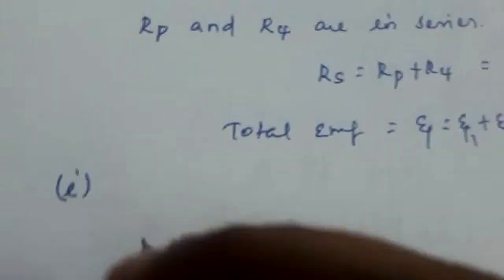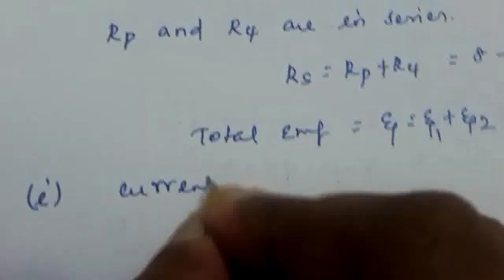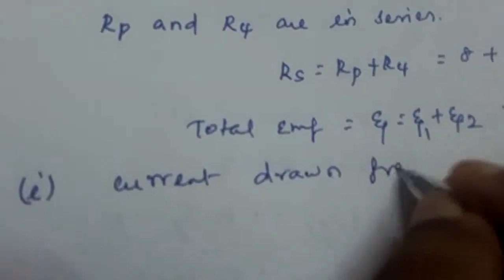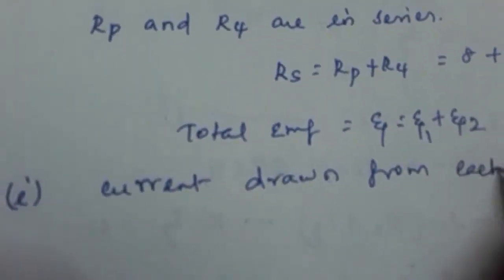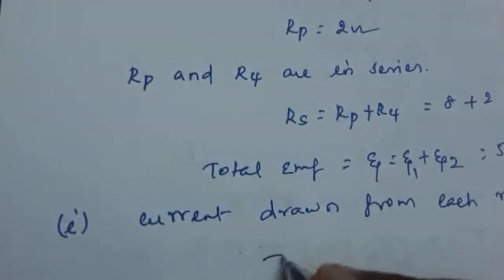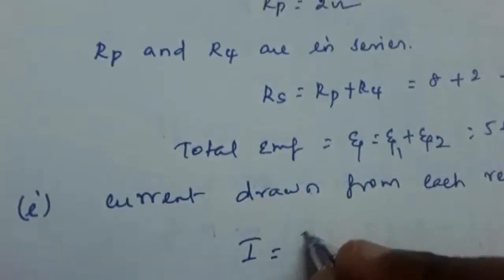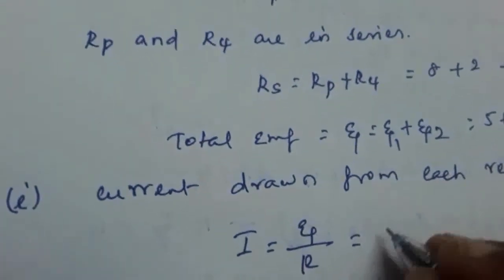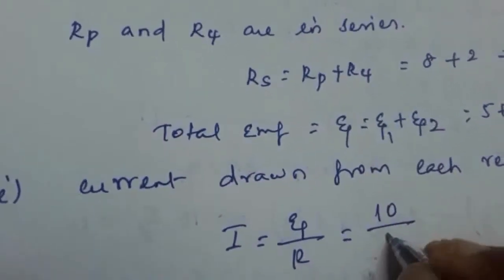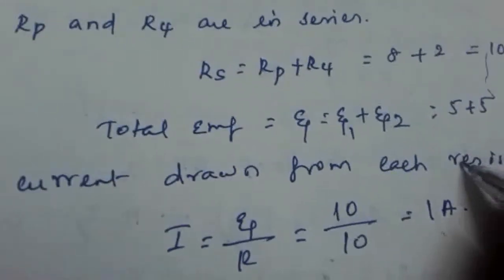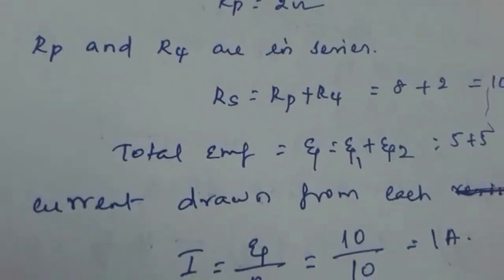Now we find the current drawn from each cell. Using I = ψ/R, we get I = 10/10 = 1 ampere. So the total current from each cell is 1 ampere.